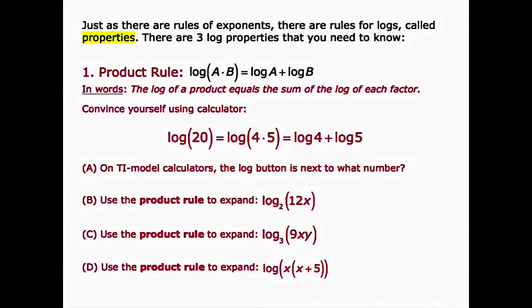The first property we're going to look at is called the product rule. This states that the log of a times b is equal to the log of a plus the log of b. In words, this would be read: the log of a product equals the sum of the log of each factor. So we're going to convince ourselves that this property actually works by using our calculator.